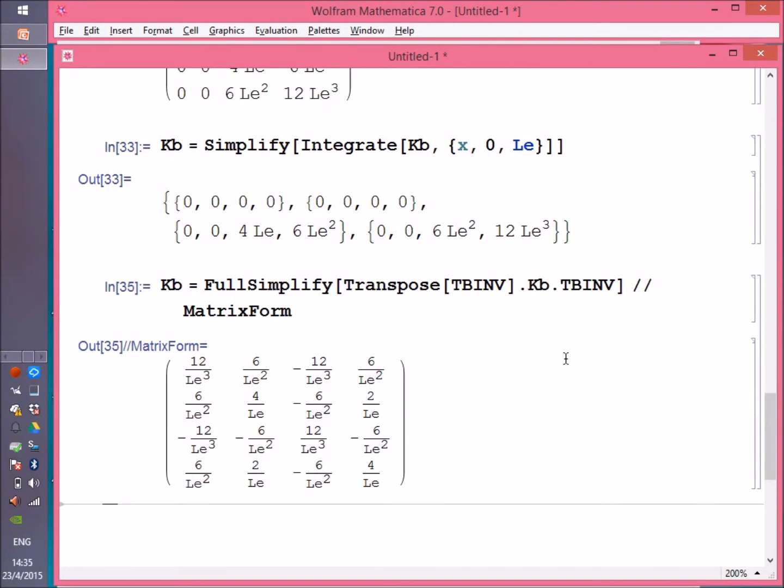So this is the stiffness matrix for a beam element, and this is how we derived it. The same procedure will be used for any other element that we will derive. Next video, we will show how to perform the same procedure using numerical integration to obtain the stiffness matrix of a beam.